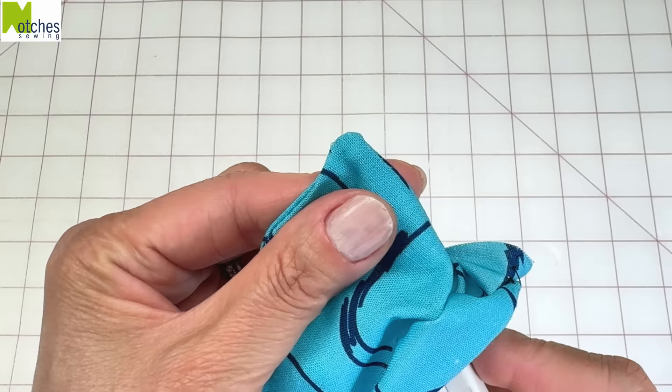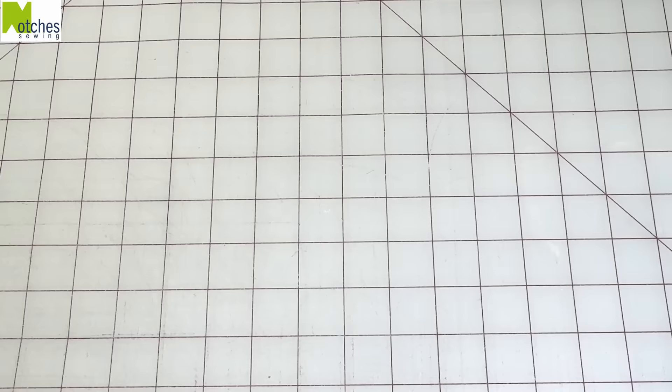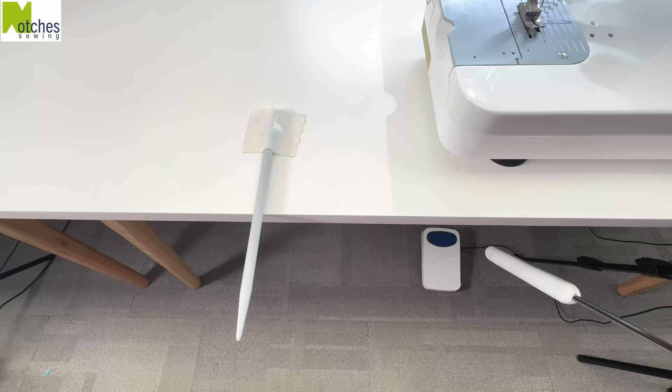This is a point turner. I just find that it's a little bit too pointy and can easily poke through certain fabrics. Instead, you can use different size knitting needles as they're a little bit rounder at the point. These double pointed knitting needles can be taped to a table, so if you have a lot of corners to push out, both your hands are free to pull on the fabric.